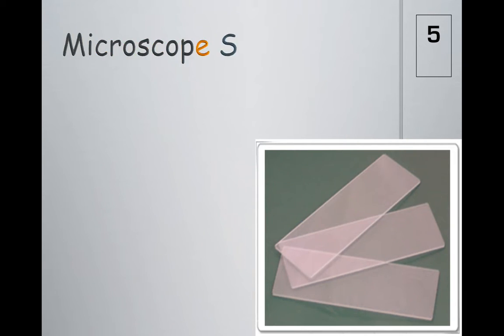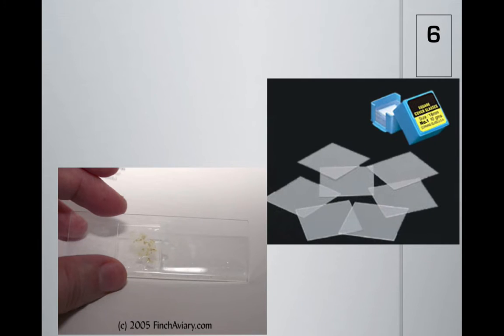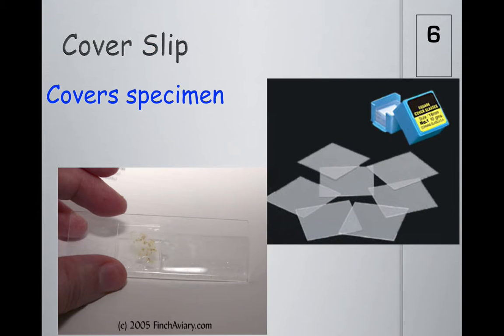Number five: the microscope slide. This is what goes on the microscope where you put your specimen for microscopic investigation. On top of the microscope slide, you put one of these little square pieces - the cover slip - which can be plastic or glass. You cover your specimen, putting water between the glass slide and cover slip, so when light goes through it in the microscope you can see more clearly what you're looking at.